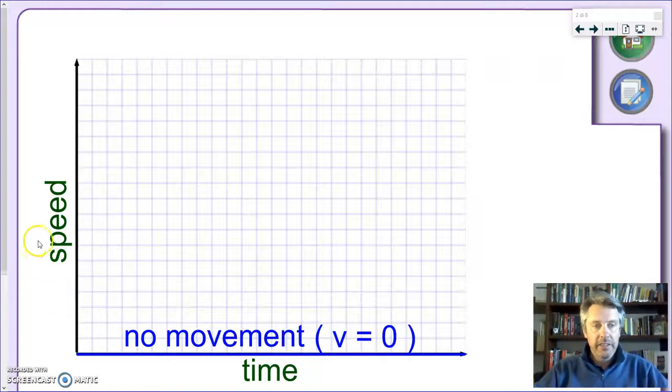If you remember, in a distance time graph, this kind of motion was represented by a flat line, a line parallel to the x axis, which I remind you once again, in both cases of motion graphs, as always, the x-axis is the time line, so the time is the horizontal line.